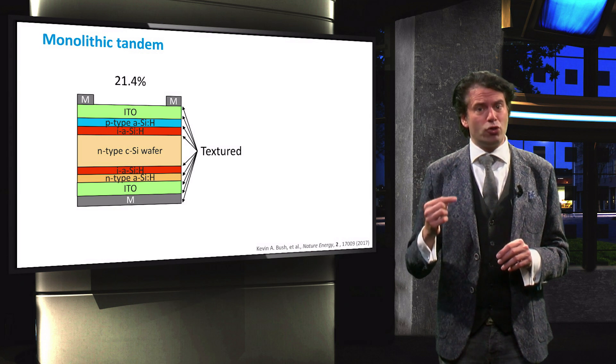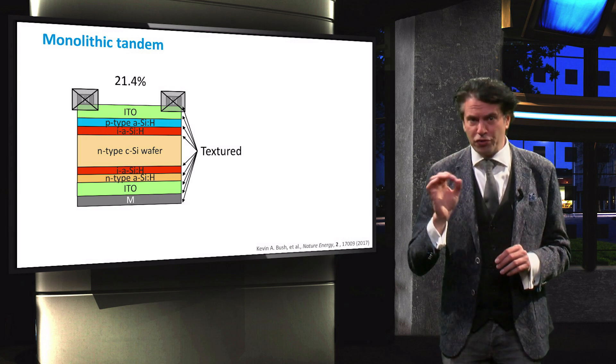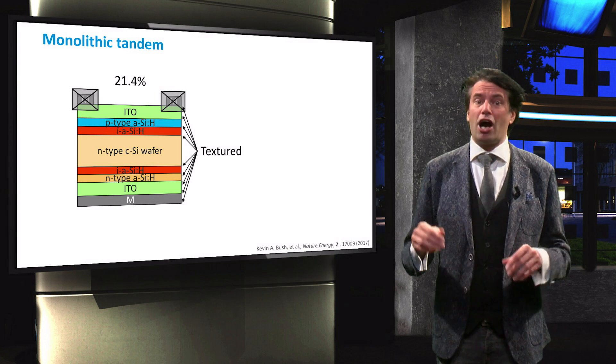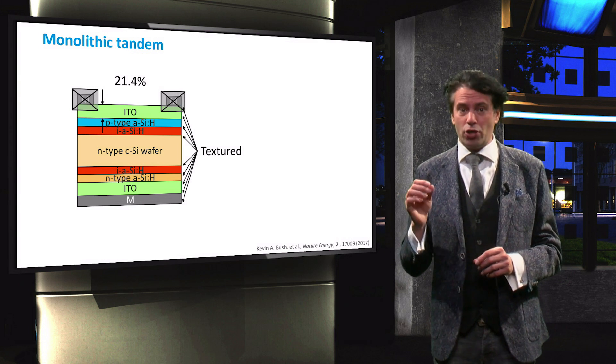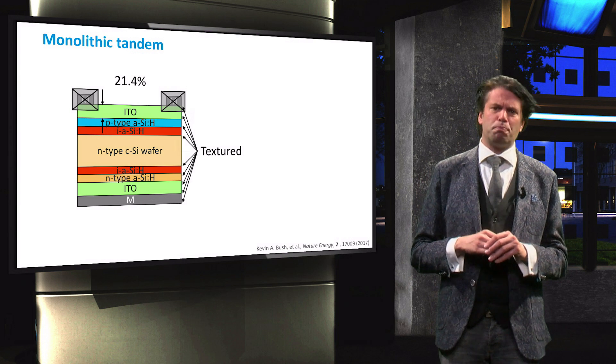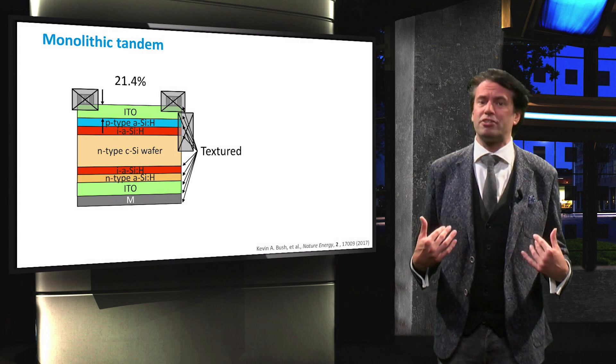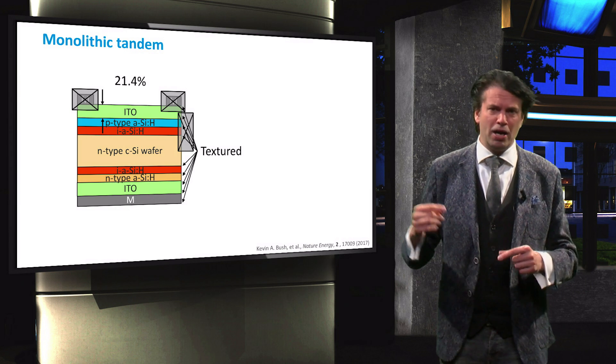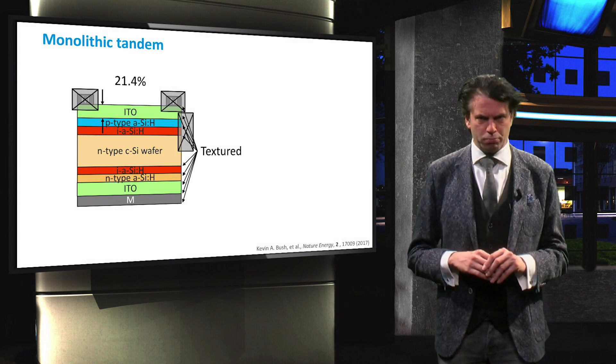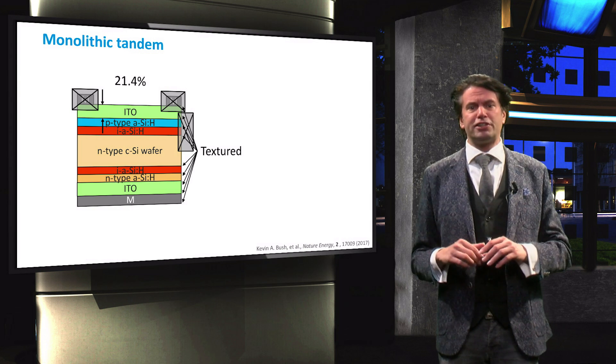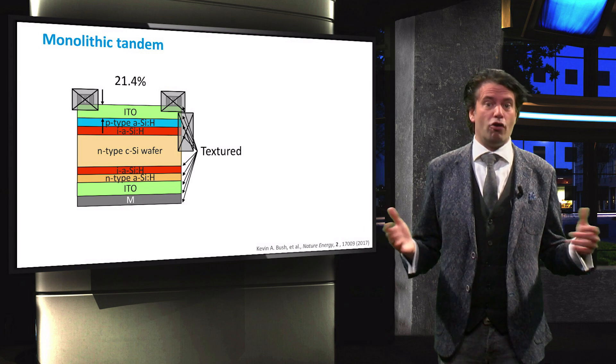For use in a tandem configuration, the front contact and anti-reflection coating are replaced by a thin ITO layer. Furthermore, the front surface is polished in order to grow the semi-transparent perovskite cell on top by means of a spin coating process. The rear surface is textured to optimize the scattering of infrared light.